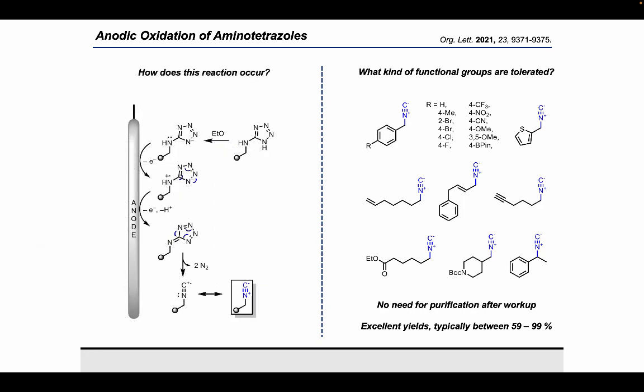So the thing you might be wondering is how does this reaction actually occur? So first, we can actually deprotonate our tetrazole through the addition of base to generate an anion, this anion is then anodically oxidized to form an unstable fulvene, which then rapidly loses two molecules of nitrogen to form the desired isocyanide.